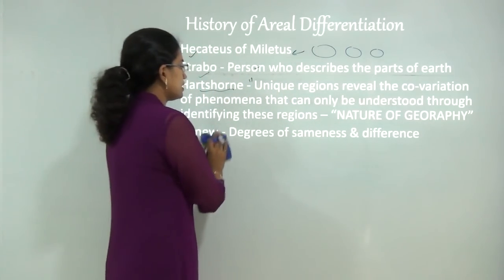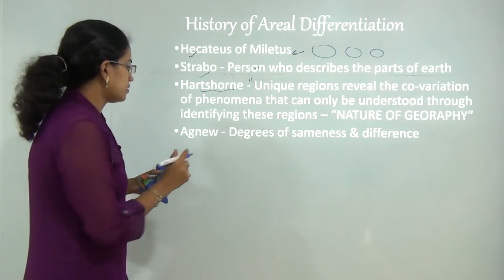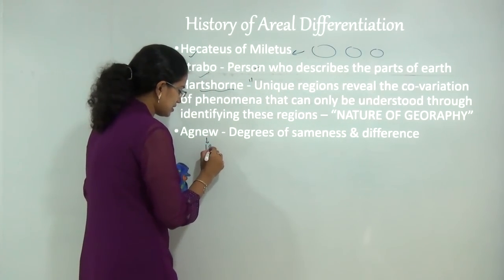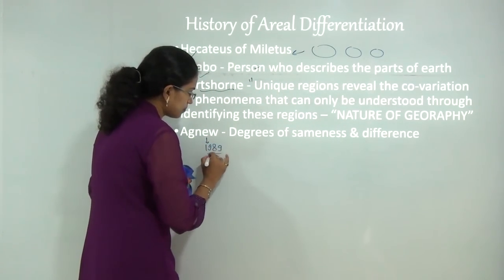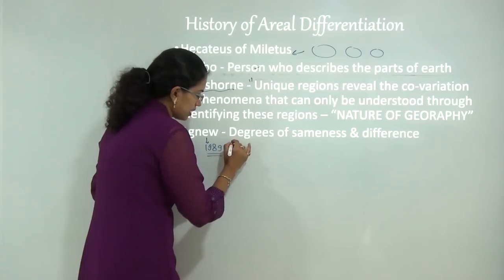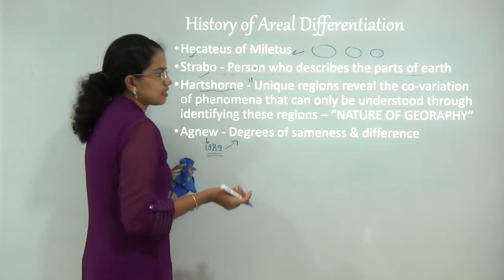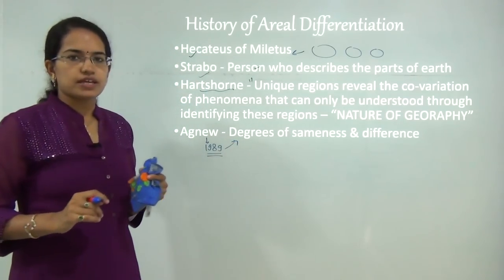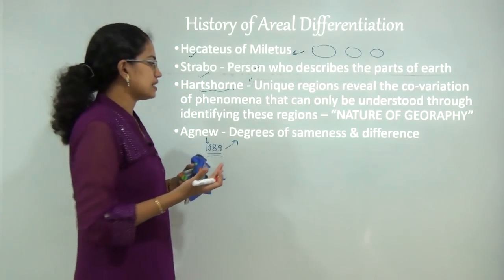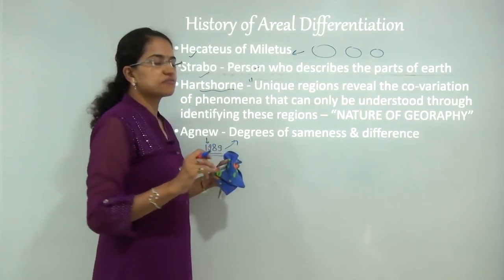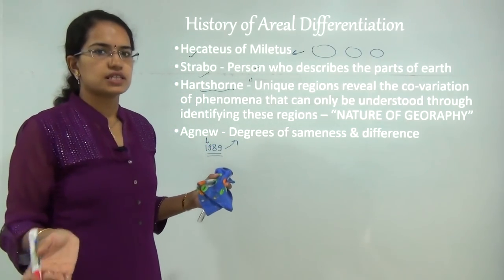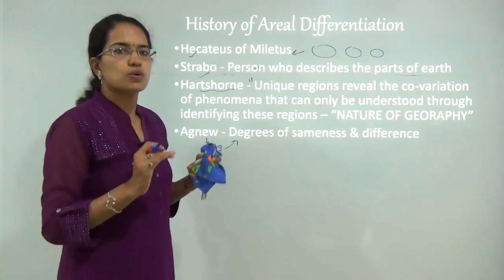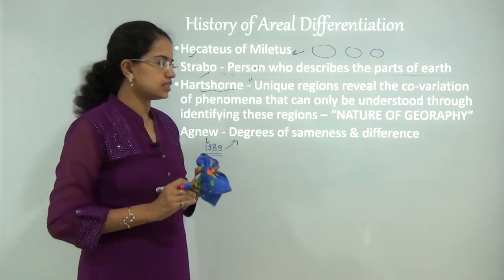Later on, Engu, in a very recent study in around 1989, explained this in a very simple way and said it is the degree of either sameness or the differences that exist within the region.